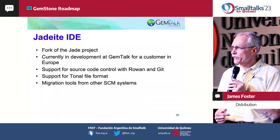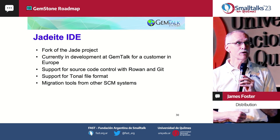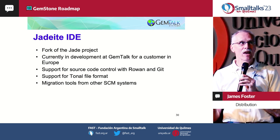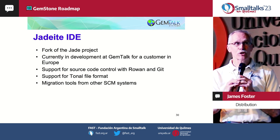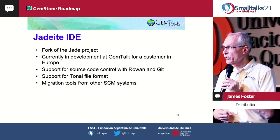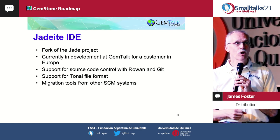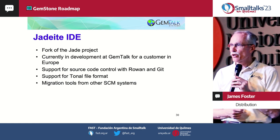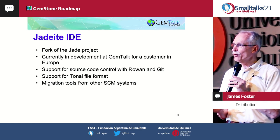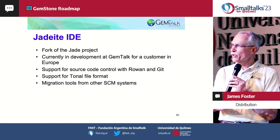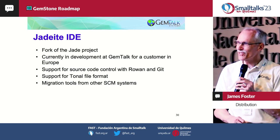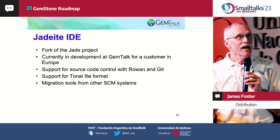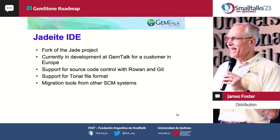Jadeite is a fork of Jade, started by a customer in Europe, that allows you to manage source code using Rowan — a new package manager — in the chunk file-out format, and migrating from other source code management systems. So if you're in an environment and want to move to Git and other things, this is the way to do it. It is written in Dolphin, but it's not following the two-objects-based model as directly as the typical GemBuilder.